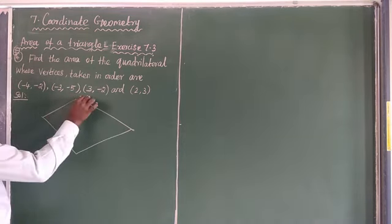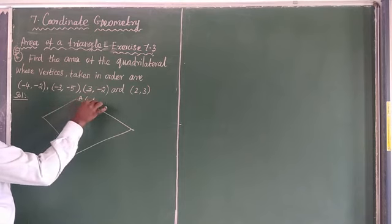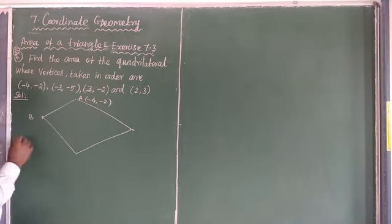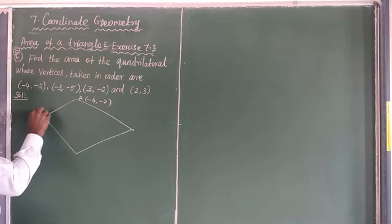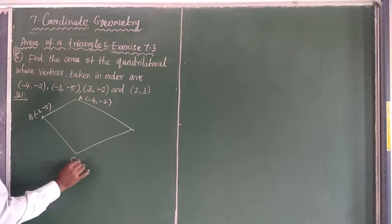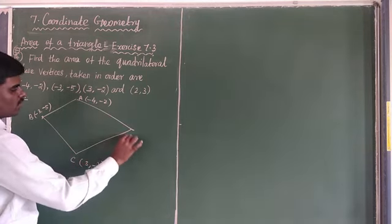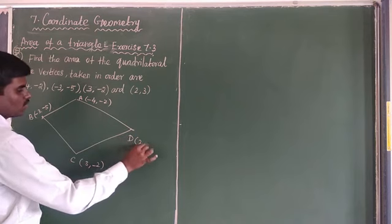I will choose the coordinate point A equals minus 4, minus 2. Again, coordinate point B equals minus 3, minus 5. Next, coordinate point C equals 3, minus 2. Again, coordinate point D equals 2, 3.